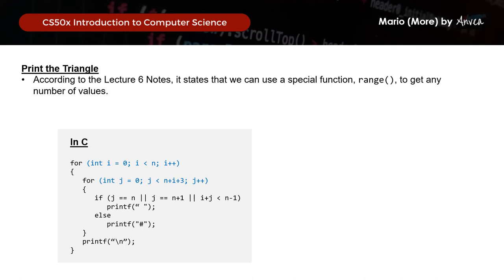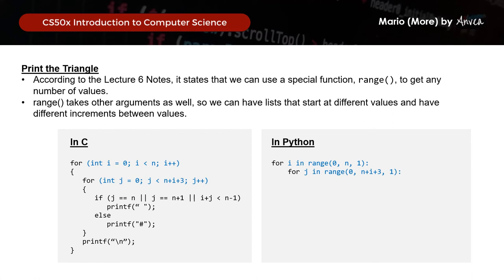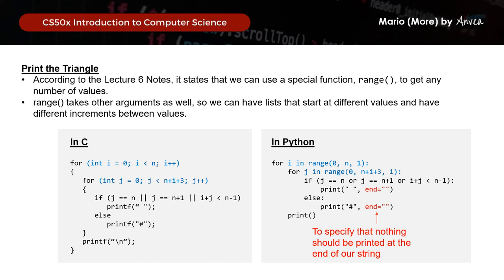Recalling the C nested loop structure, what does this look like in Python syntax? According to the lecture 6 notes, we can use the range function to get any number of values. For i, it will be: for i in range(0, n, 1), starting from i equals 0 up to n, incrementing by 1. For j: for j in range(0, n plus i plus 3). Then we print a space when j equals n, or j equals n plus 1, or i plus j is less than n minus 1. We also use end='' to specify that nothing should be printed at the end of our string. For all other cases, we print a hash, again using end=''.